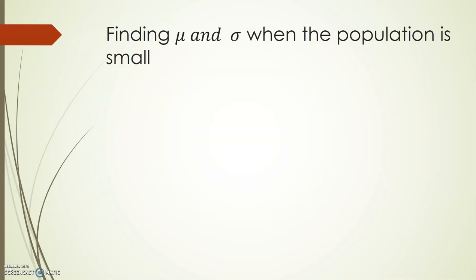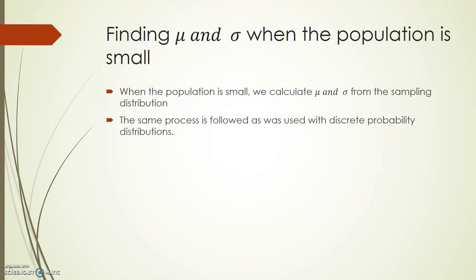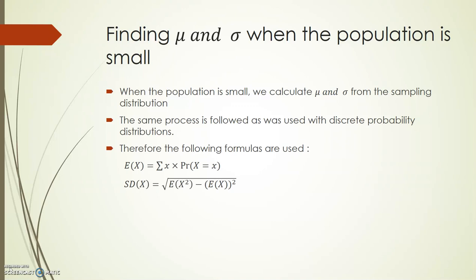Let's look at finding mu and sigma when the population is small. When the population in a question is small, we calculate mu and sigma from the sampling distribution. It's very much the same process that we followed when we were working with discrete probability distributions. You'll remember these formulas — the expected value of x is found by multiplying each value of x by its associated probability and then adding each of your answers together. The standard deviation of x is found by finding the square root of the expected value of x squared minus the expected value of x, the whole thing squared.